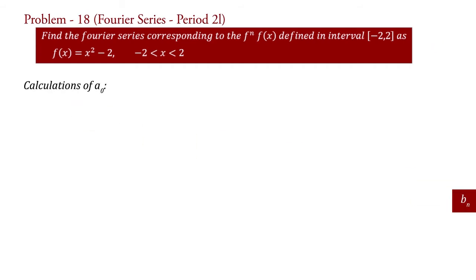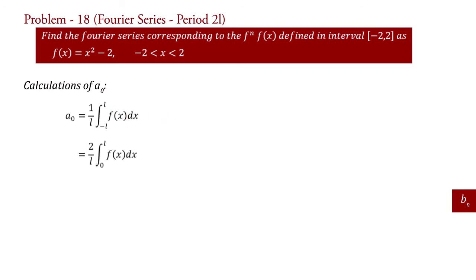Now we will calculate a0. a0 equal to 1 upon L integral minus L to L f of x dx. Since f of x is even, therefore a0 equal to 2 upon L integral 0 to L f of x dx. Put f of x equal to x square minus 2 and L equal to 2. Therefore a0 equal to 2 upon 2 integral 0 to 2 of x square minus 2 dx.